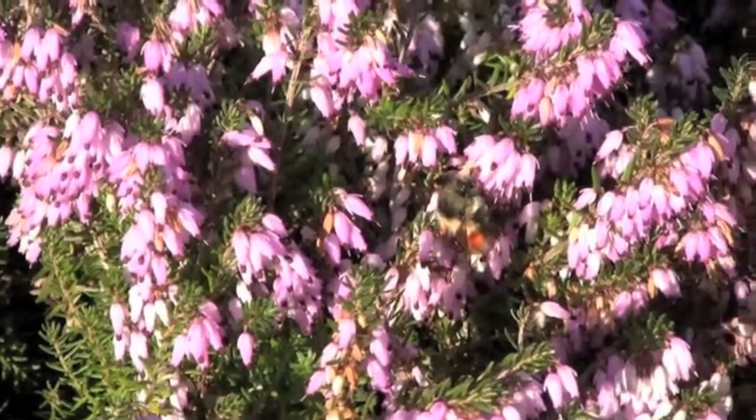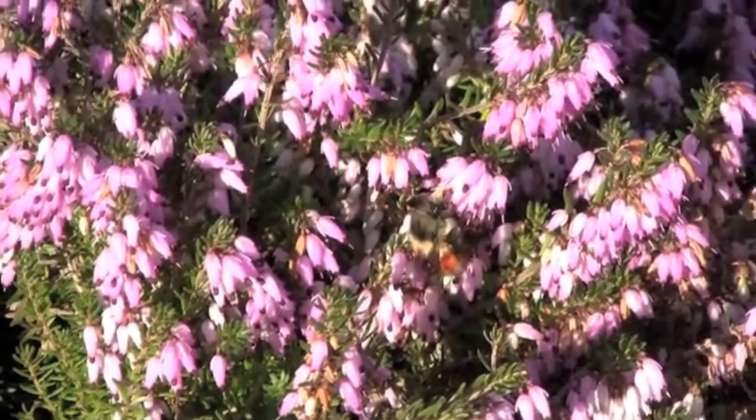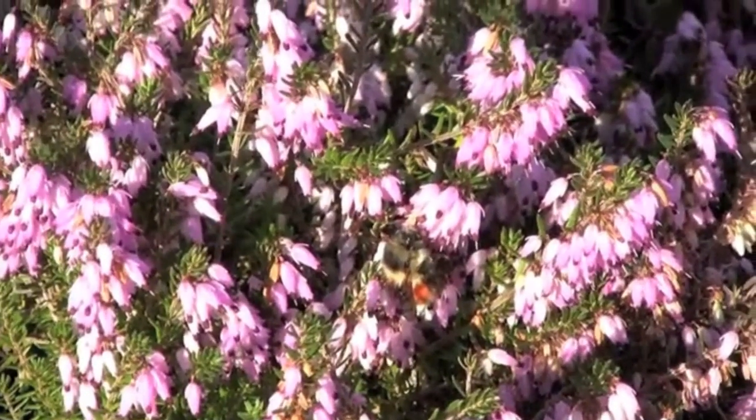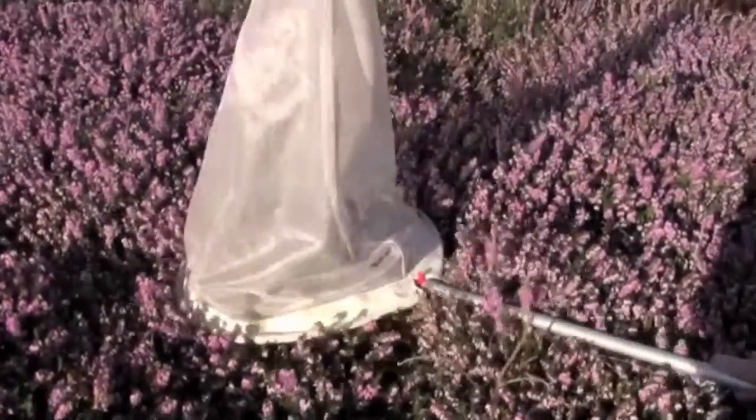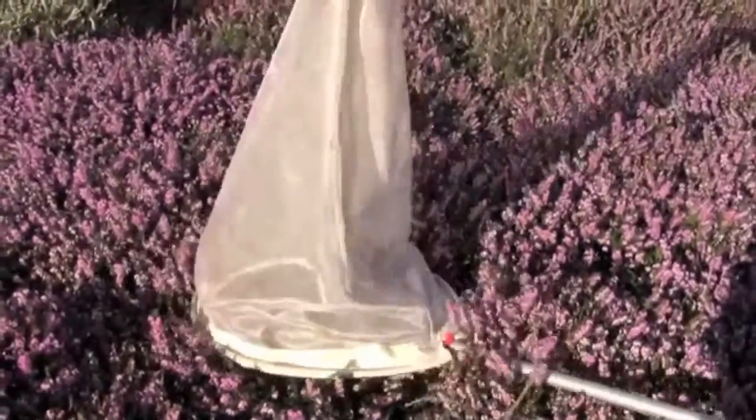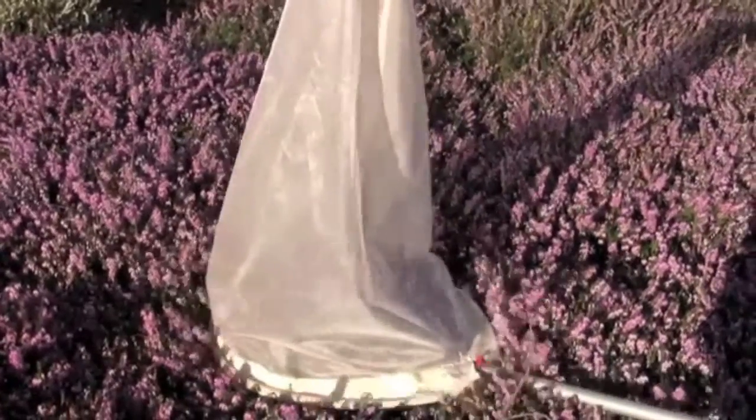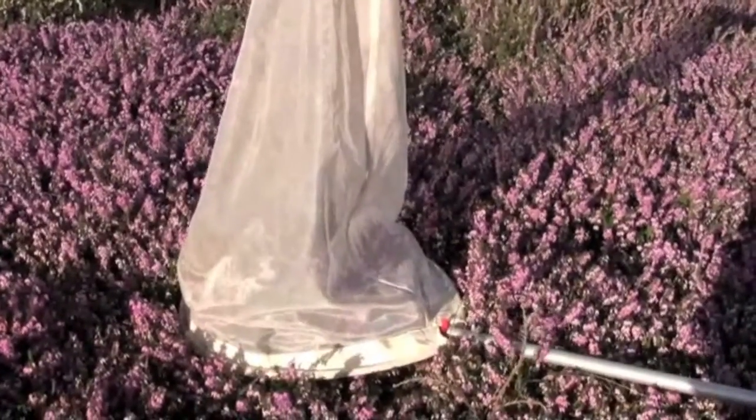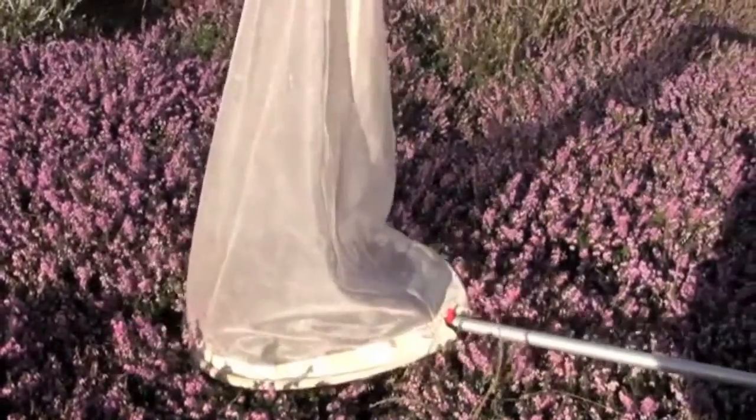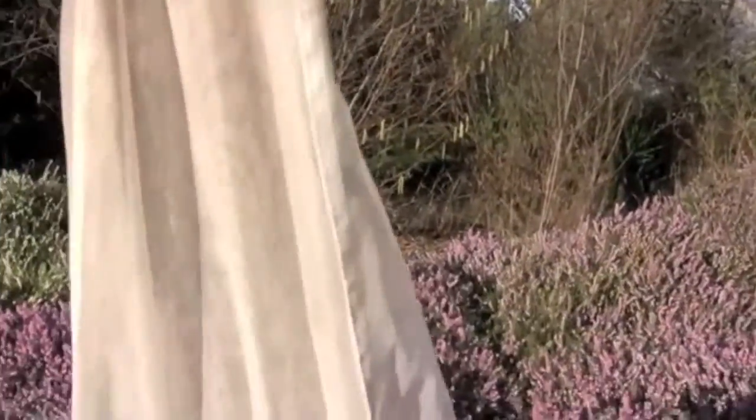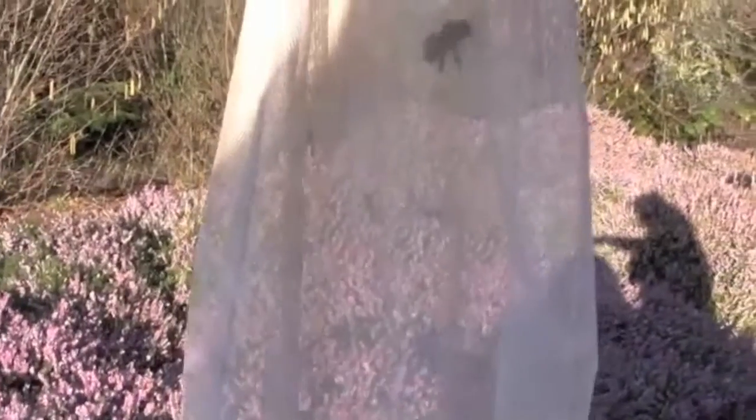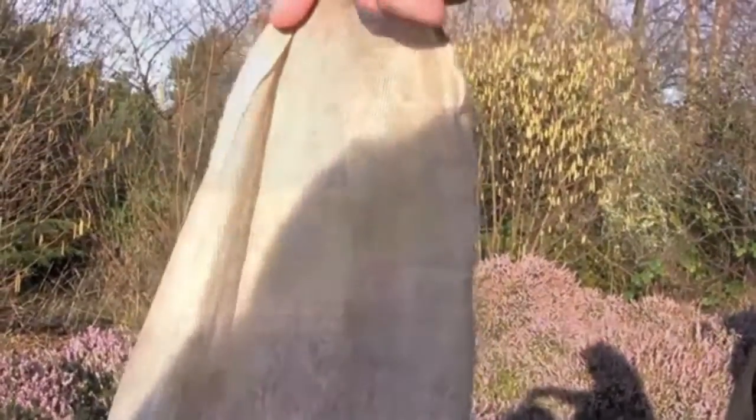To catch a bumblebee queen using the net method, you can simply locate a queen, as you can see here, and then basically just place your net over the top of the queen, and then gently lift your net up, and the bumblebee will actually fly to the top of your net, as you can see here. And you can see if you hold your net straight up, the queen will fly to the top, and then you can just fold your net over, and as long as you hold the net up, the bees will basically fly up towards the sun.